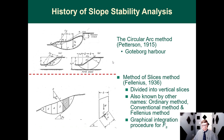Let me go into some of the history of two-dimensional slope stability analysis. In 1915 there was a massive landslide in Göteborg harbor in Sweden that disrupted shipping. Pedersen was set up to head the Swedish Geotechnical Institute to figure out how to analyze sliding masses. One thing that came out of his study was that the slip surface, when investigated, was near circular in shape — identifying the shape of the slip surface in clay materials.